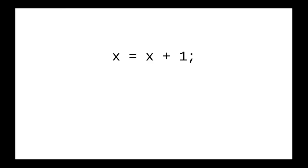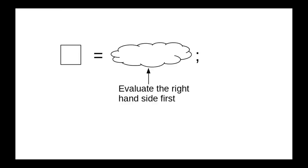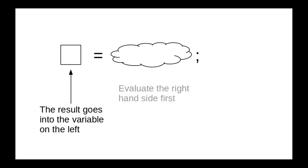The moral of the story: whenever you see an equal sign in a Java statement, you read it as 'variable is assigned value,' 'variable becomes value,' or 'variable gets value.' You go to the right-hand side first and figure out what that value works out to. Once you have it completely worked out, then the variable on the left will get that value.